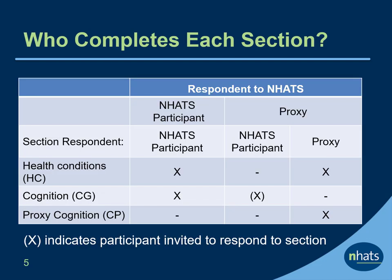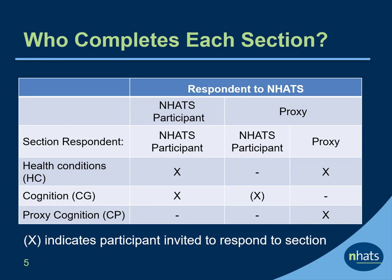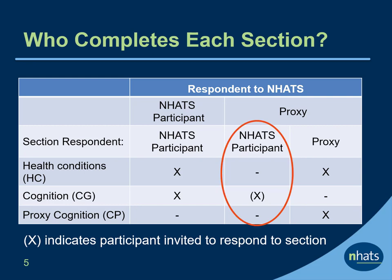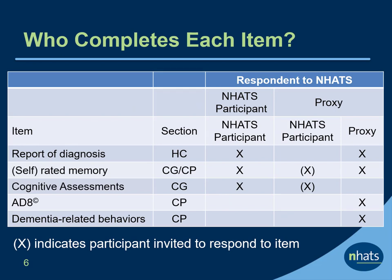If the NHATS participant is the respondent to the interview, the HC and CG sections, but not the CP section, are completed. If there is a proxy respondent, the HC and CP sections are completed by the proxy. The NHATS participant is invited to complete the CG section about half the time. This table provides an overview of items in the HC, CG, and CP sections.